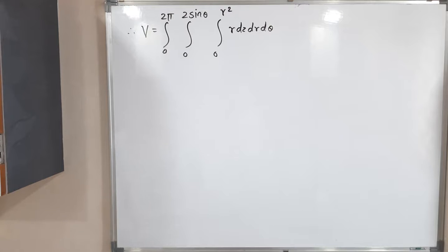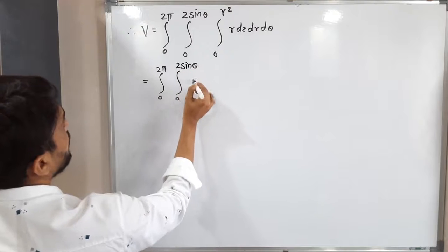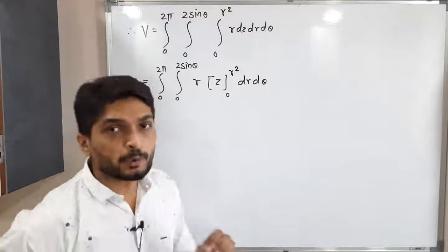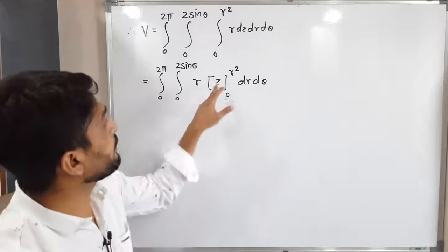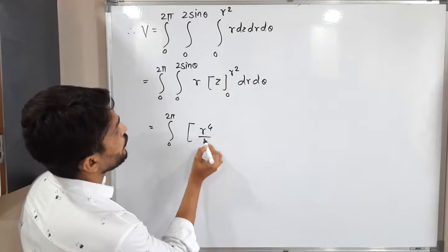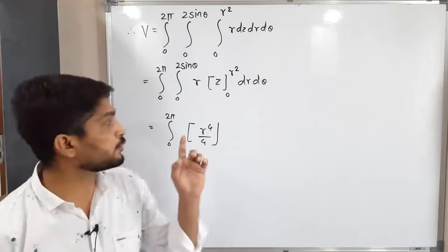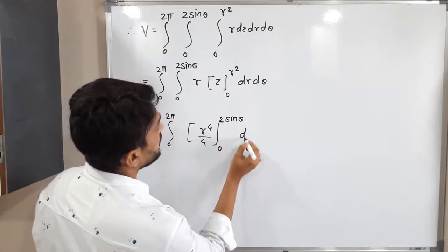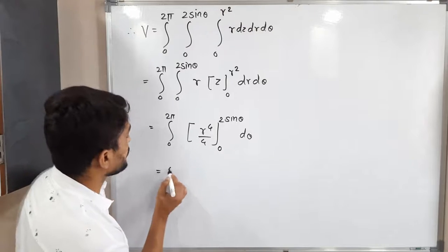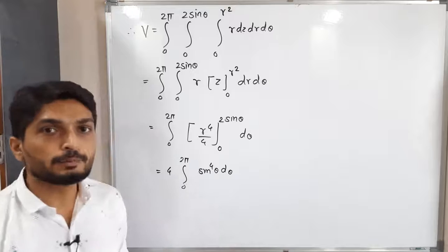First we integrate with respect to z; r is constant for the inner integral so it comes outside. Integrating z from 0 to r² gives r · r² = r³. Then integrating r³ with respect to r gives r⁴/4, evaluated from 0 to 2 sinθ. Substituting the upper limit: (2 sinθ)⁴/4 = 16 sin⁴θ/4 = 4 sin⁴θ. So we have: 4 ∫₀^π sin⁴θ dθ.